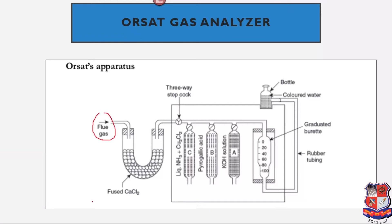First, what are flue gases? Taking a combustion engine as an example — we get some exhaust. Similarly, in a boiler, by combustion of fuel we get some conversion of that fuel. After combustion, this fuel generates some gases — those gases are called flue gases. These flue gases contain components like CO2, CO, N2, and O2.